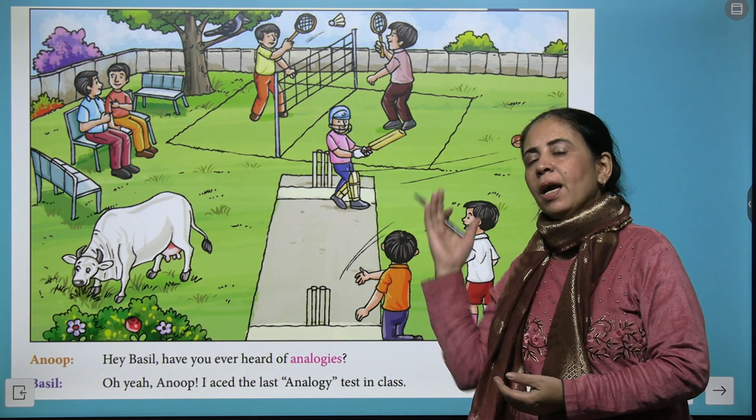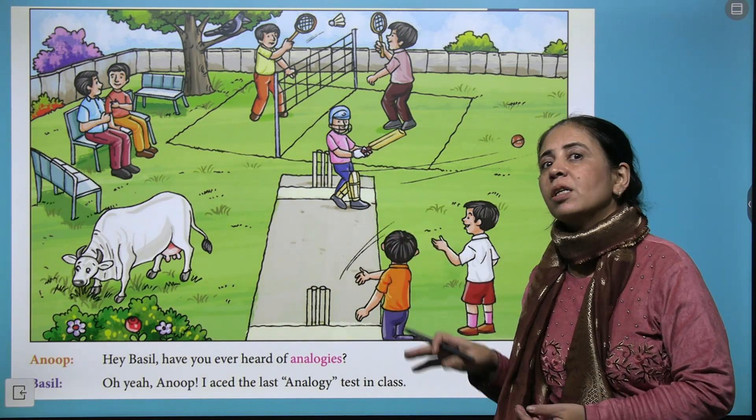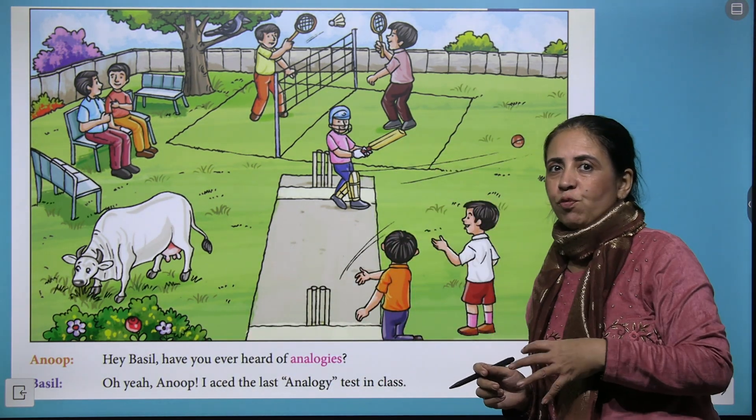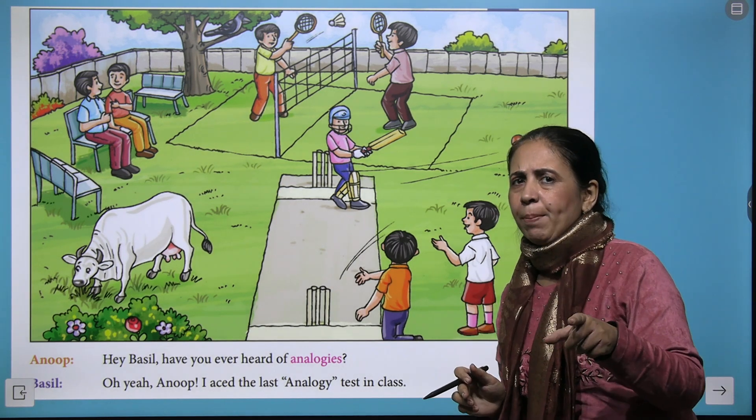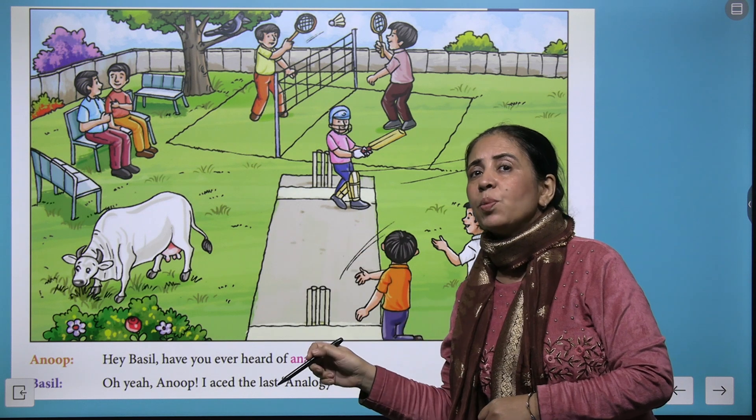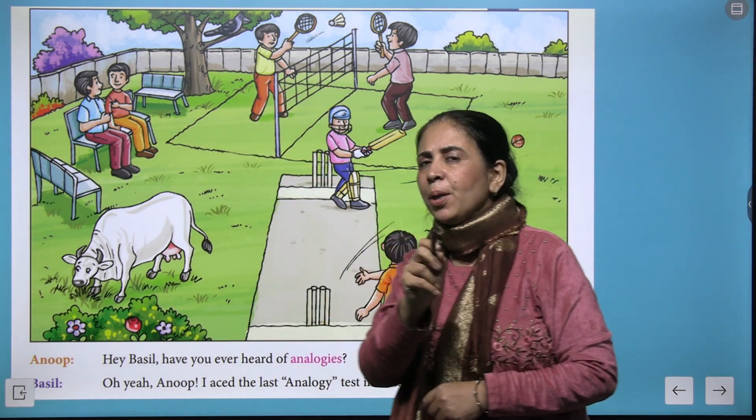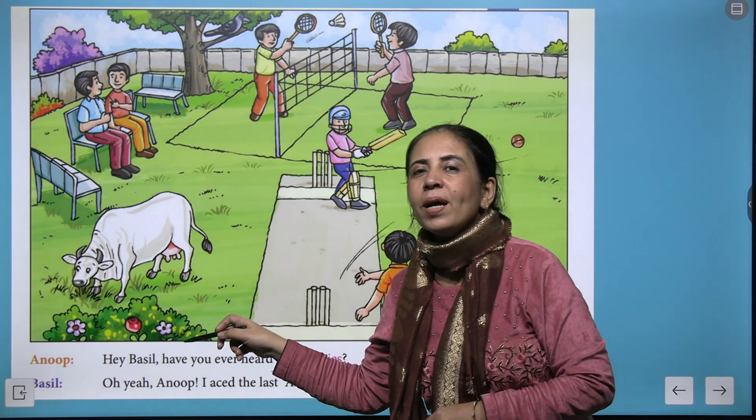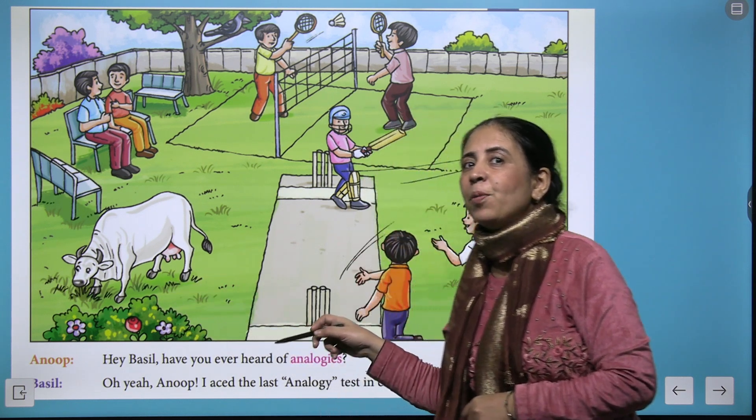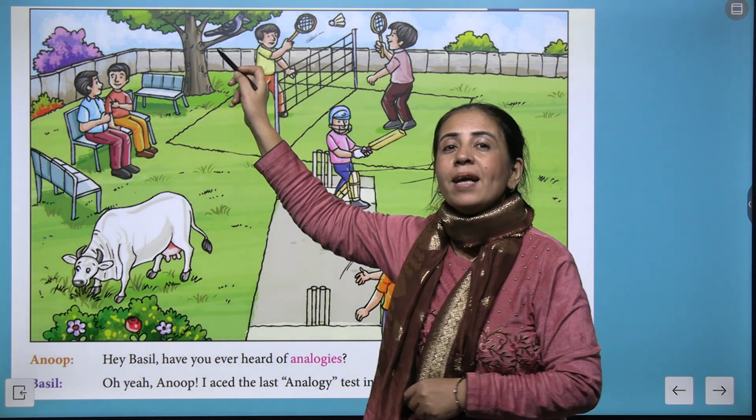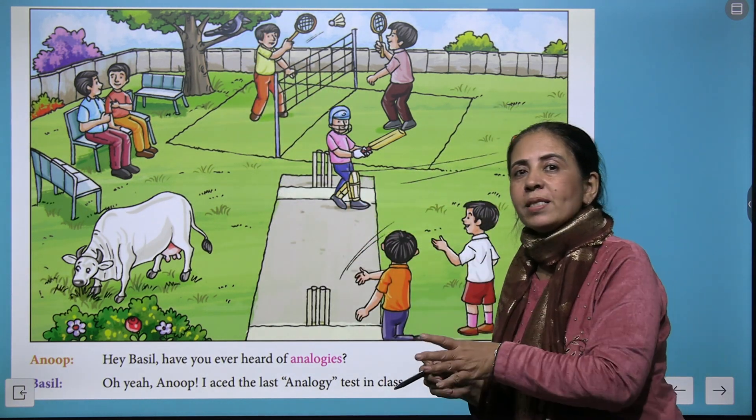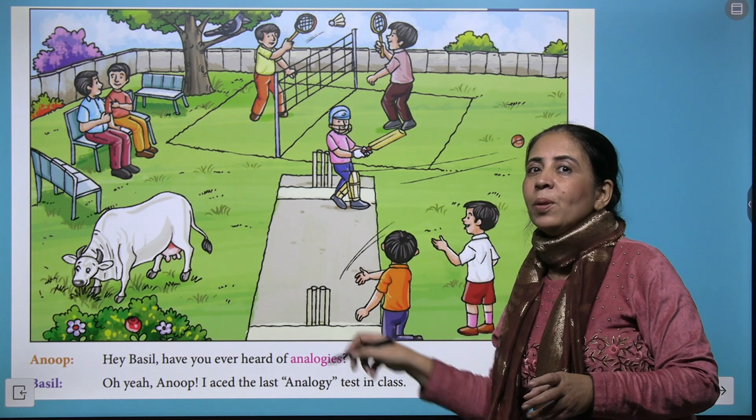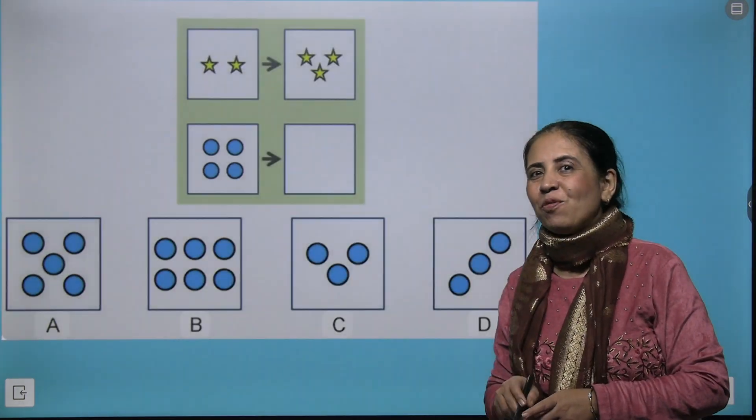When you talk of analogy here I have brought a beautiful picture and we could see that Anub and Basil are talking and trying to find out the analogy and they promptly came up with the answer as batters to cricket we have racketers to badminton. Can you help them to find one more analogy here? Look at the cow. Cow is herbivorous and what do you say about crow? Yes crow is omnivorous. So we say cow is herbivorous similarly crow is omnivorous. Now that's making you the Einstein of analogy.